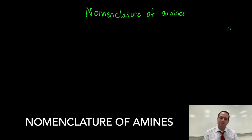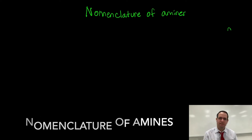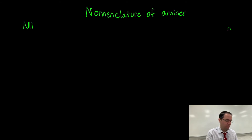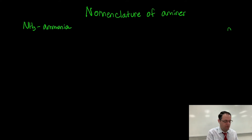Section 2 talks about nomenclature of amines. Amines are pretty easy to name. Let me go ahead and just show you some examples. So first of all, if you have NH3, just memorize from general chemistry, that's called ammonia.